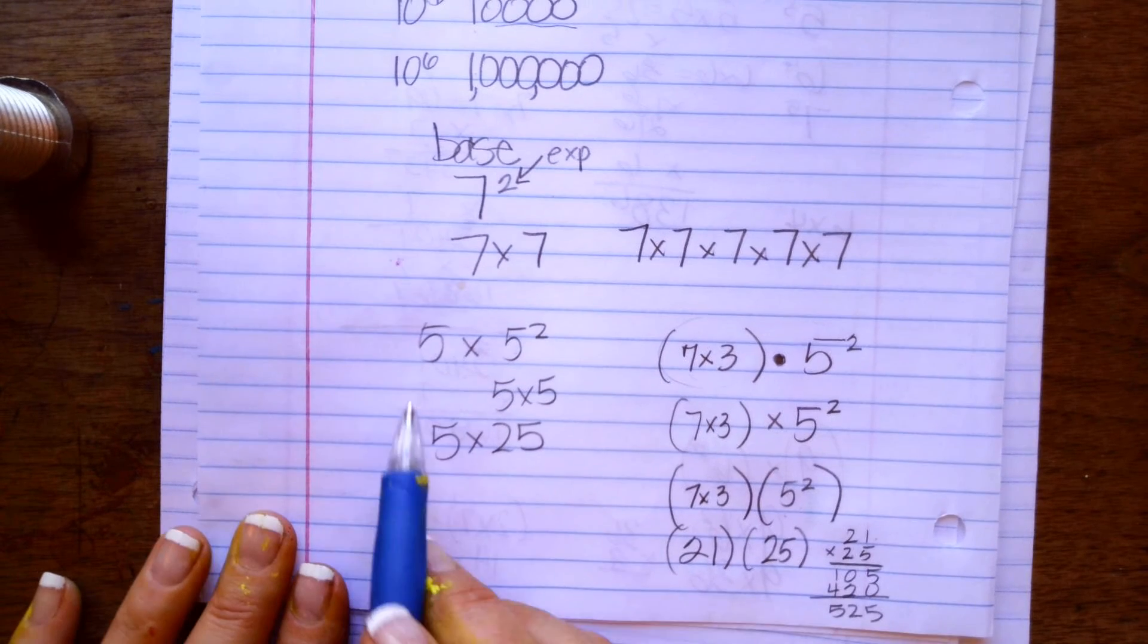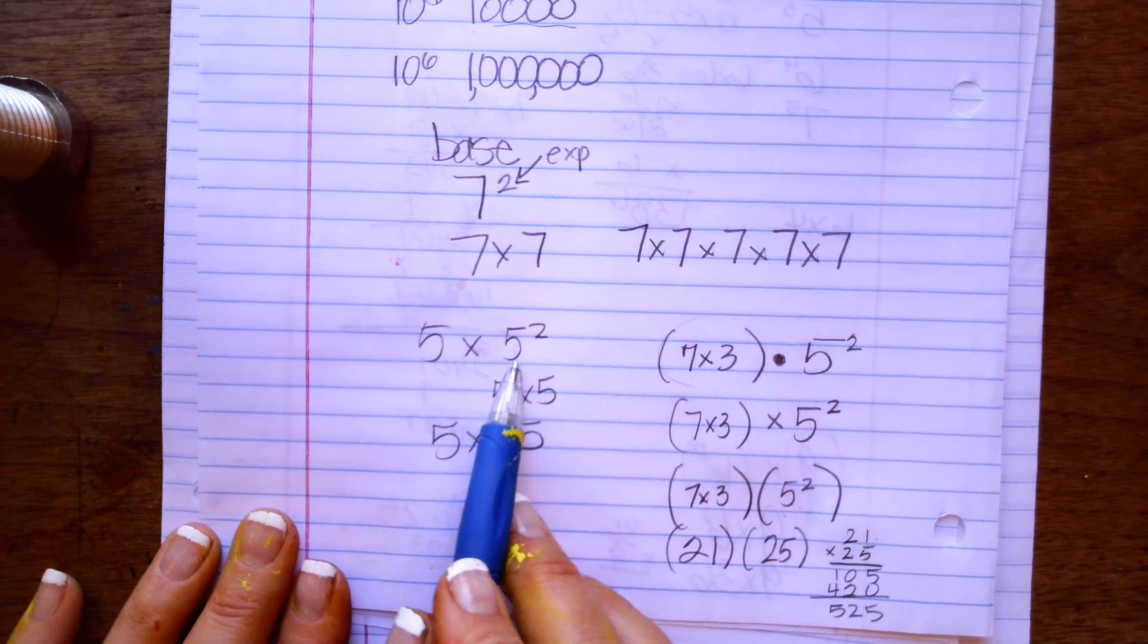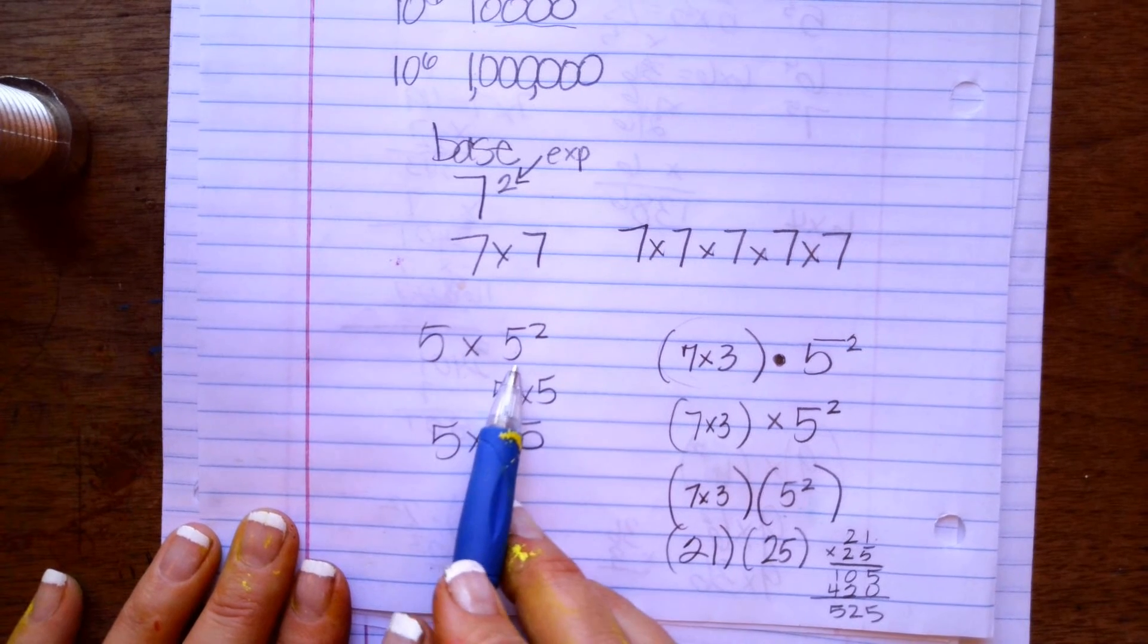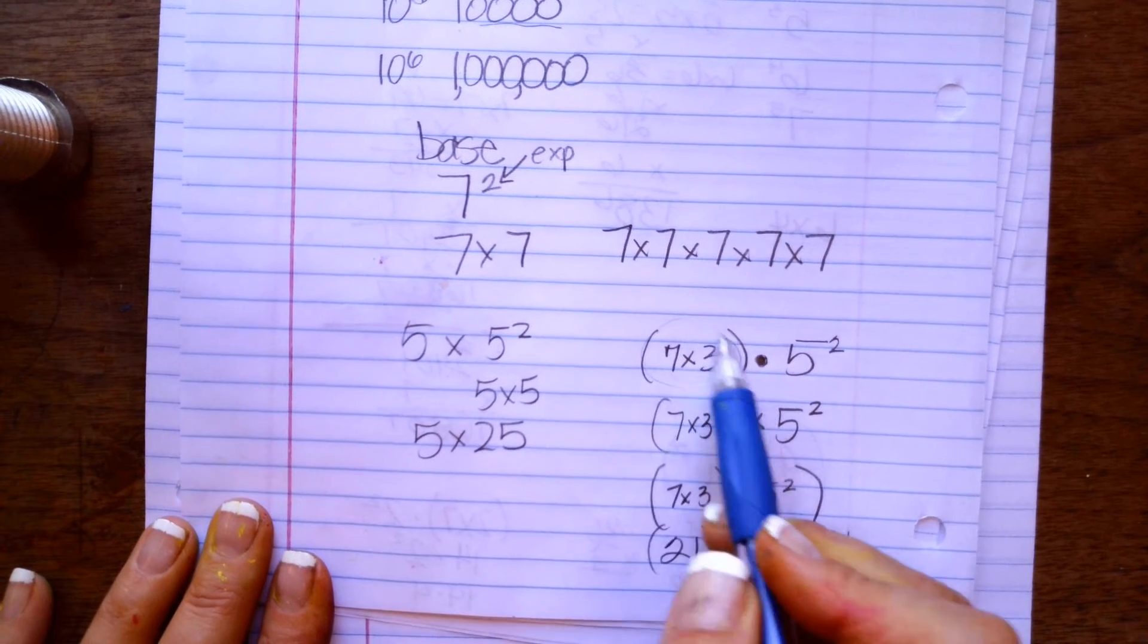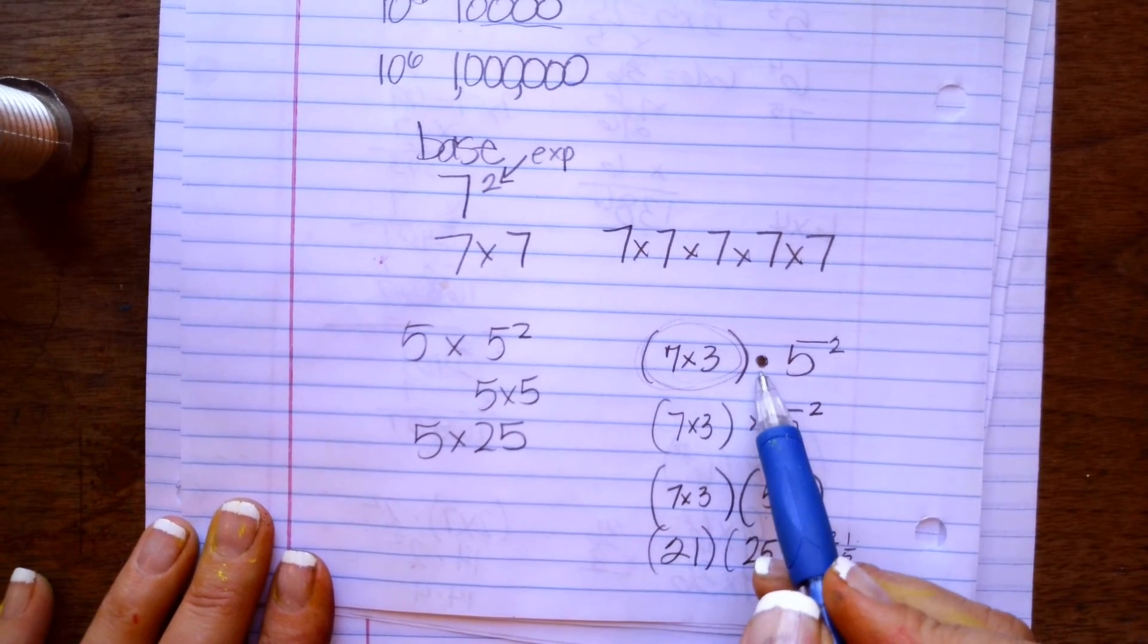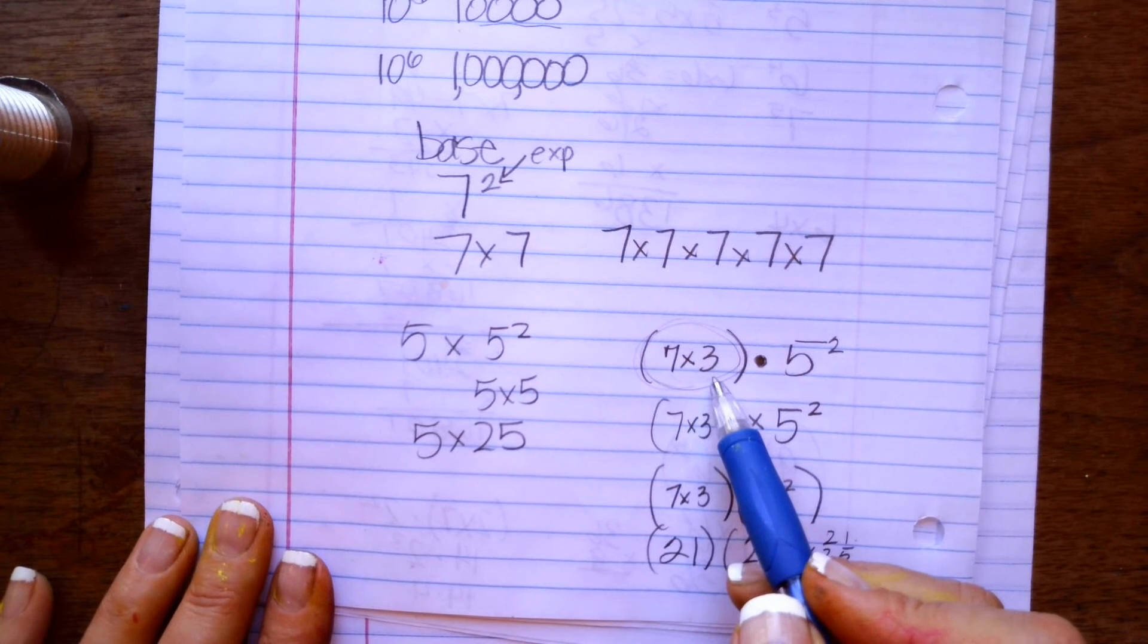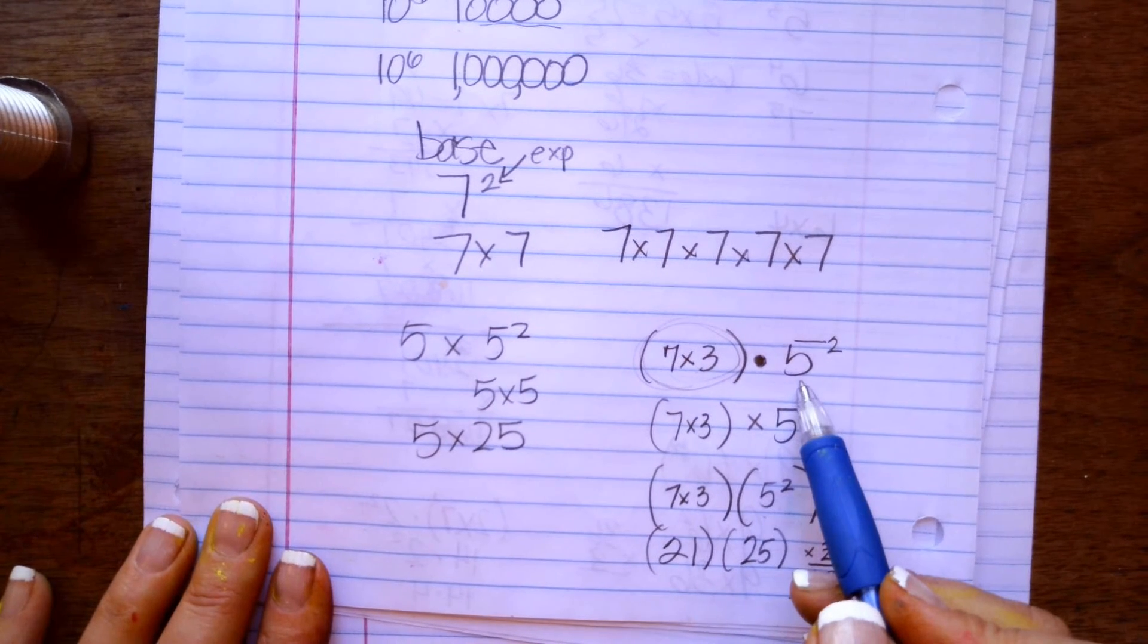You're going to see it with just a number multiplied by an exponent and a base. And then you're going to see a whole other math problem, like 7 times 3 or 8 times 4 or whatever, and that's going to be multiplied by your exponent.